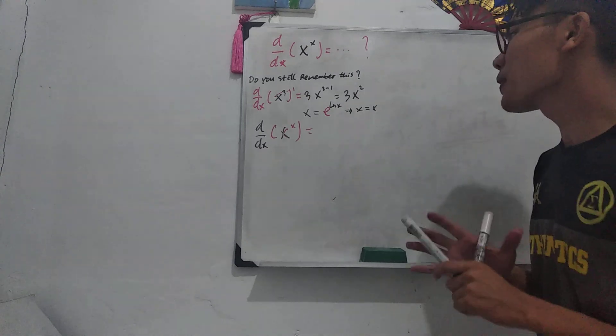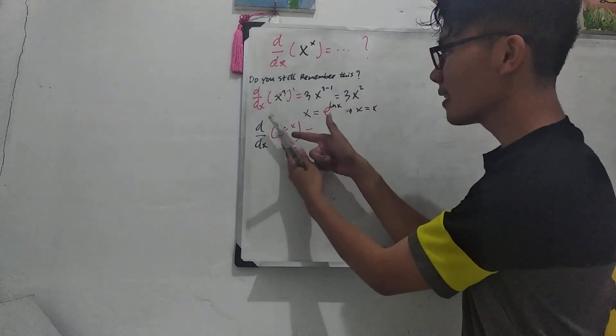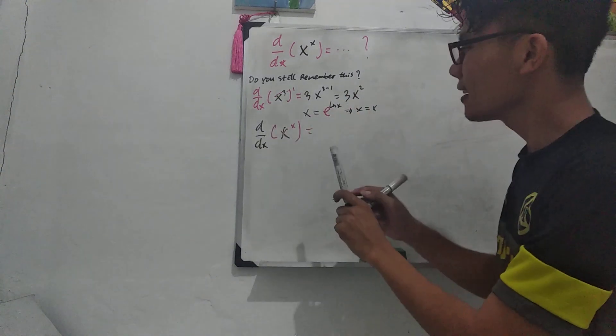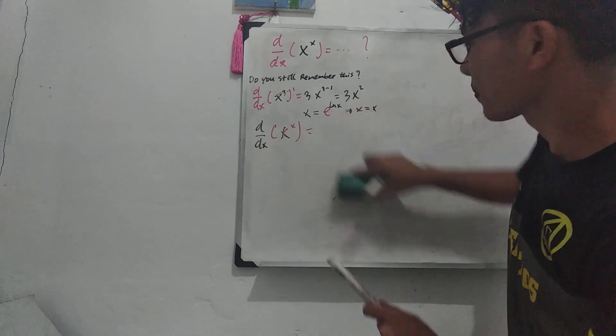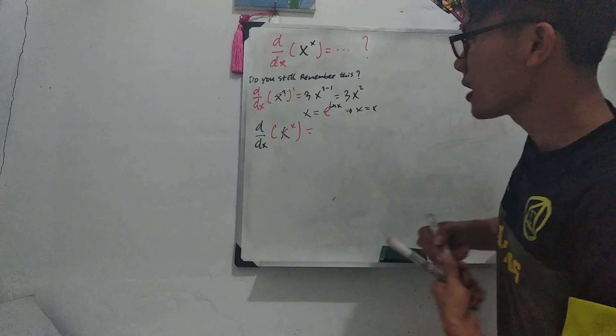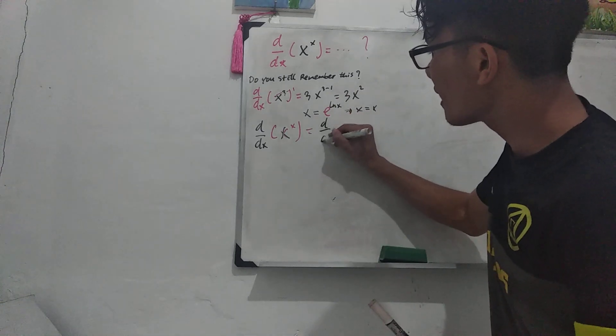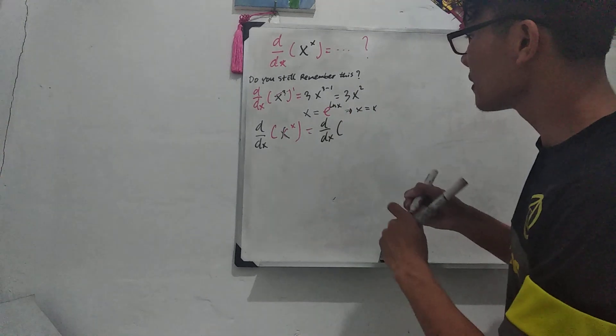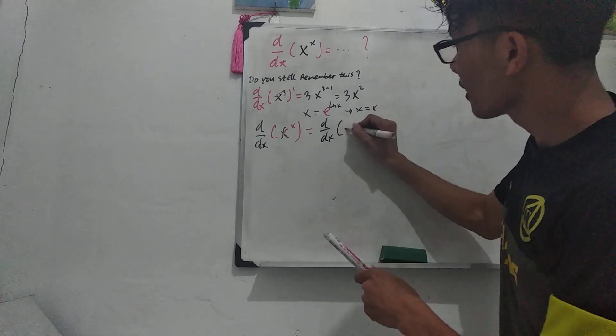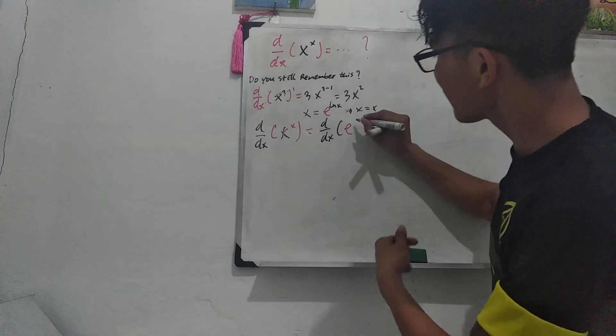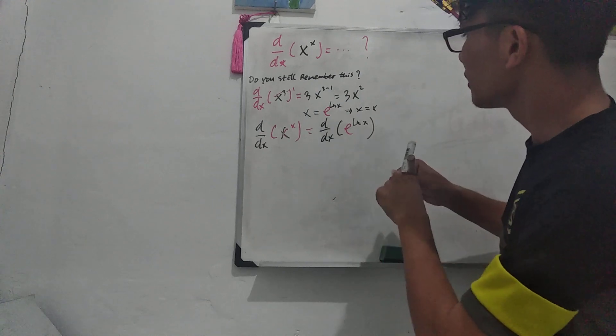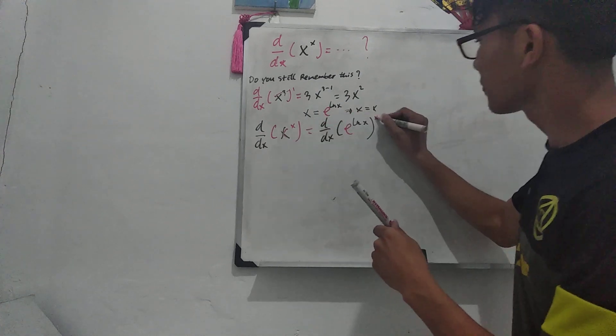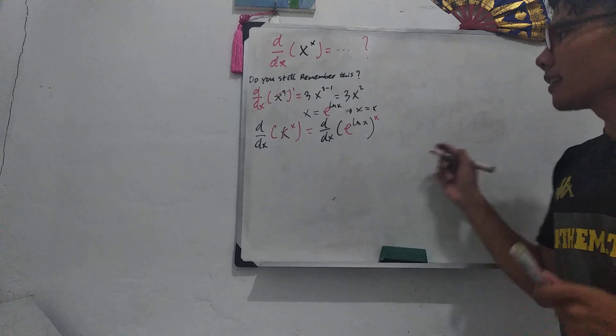Now next, what we're going to do is we'll just substitute this x to the power of x with this e. And then we have d/dx, and now I have e to the power of ln x, and to the power of this x. So that's it. Now let's continue.